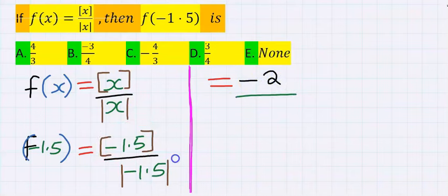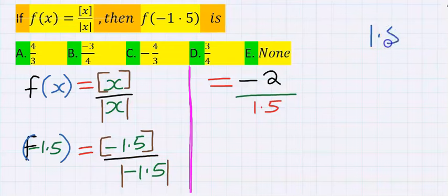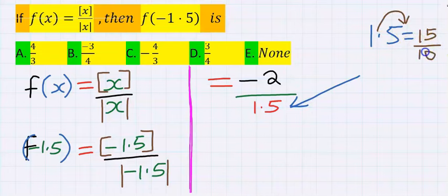Next, at the denominator, absolute value rejects negative. If you give absolute value a negative, it's going to return positive. Hence, minus 1.5 becomes just 1.5 without the negative. Consider 1.5 at the denominator. 1.5, if this decimal moves, becomes 15 over 10, which is 3 over 2.